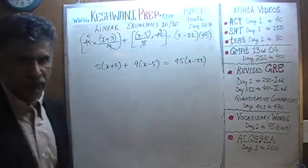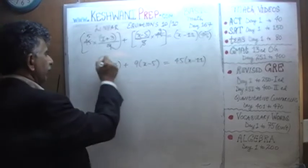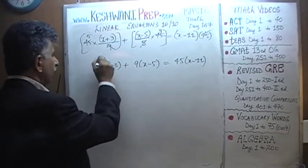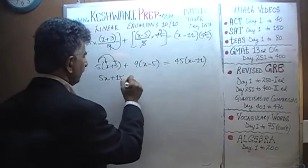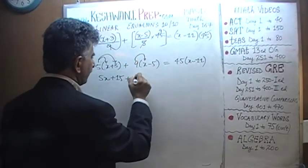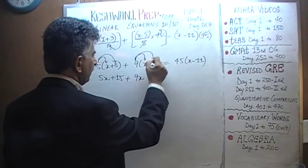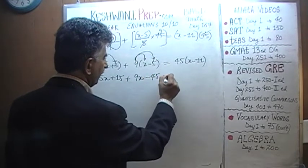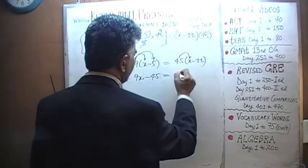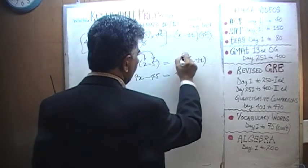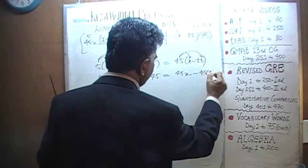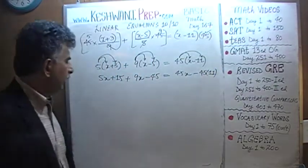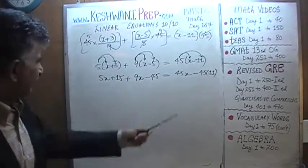The rest is downhill, we just have to open the parentheses and do it out. So we end up with 5x, 5 times 3 is 15, it's positive 15. It has to equal 45 times x, that's 45x and then here we have minus 45 times 11. I'm going to leave it alone for the time being, let's not mess with that right now.